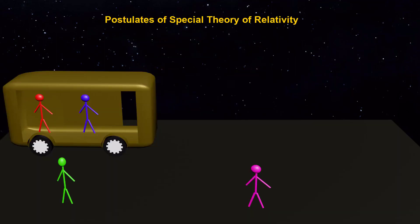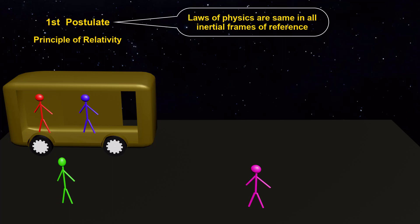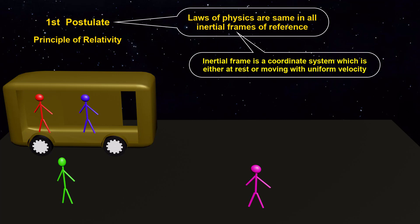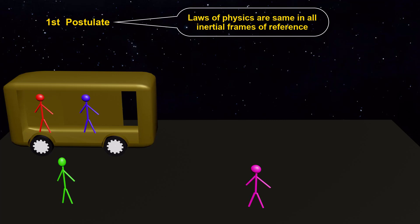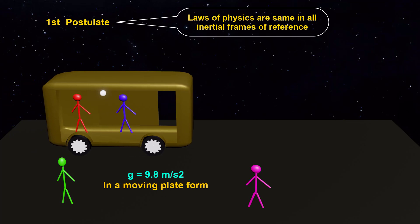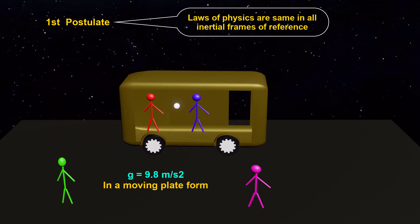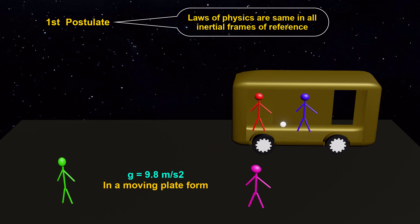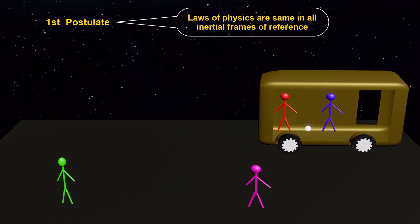The special theory of relativity is based on two postulates. The laws of physics are the same in all inertial frames of reference. In other words, if you drop a ball on a moving platform, it will fall to the floor at the same rate regardless of whether the platform is in motion or stationary. This is because the laws of gravity are the same in all inertial frames of reference.